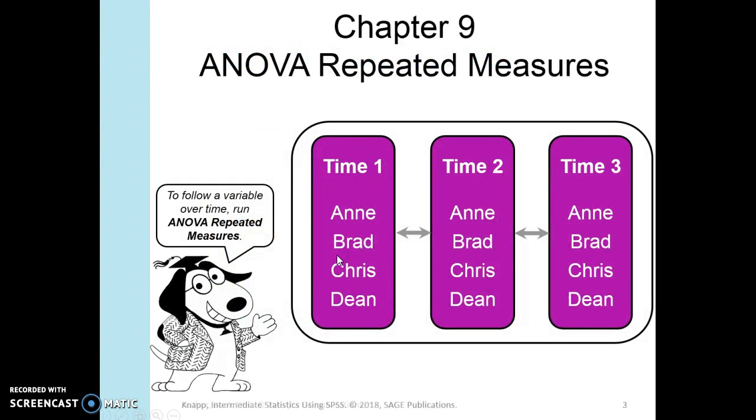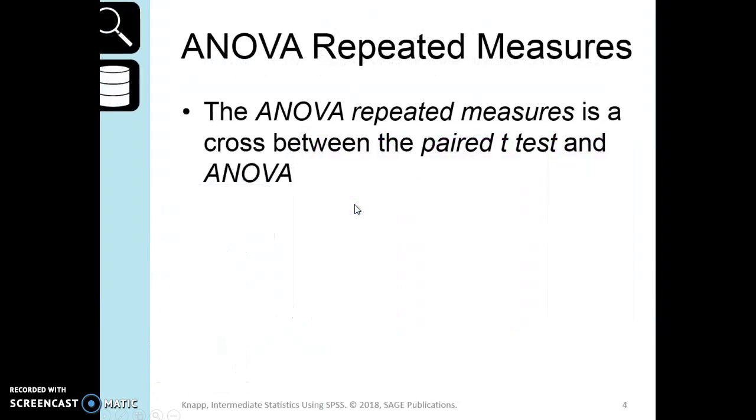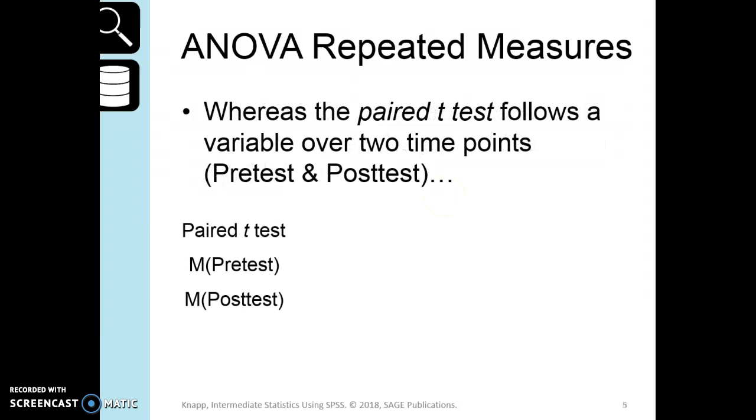Let's talk about the ANOVA repeated measures. To follow a variable over time, you would run an ANOVA repeated measures, especially if you had more than two times, because if you were going to compare two of these, time one and time two, you could just do a regular ANOVA. Actually, you would do a t-test, a paired t-test. ANOVA repeated measures is a cross between the paired t-test and the ANOVA.